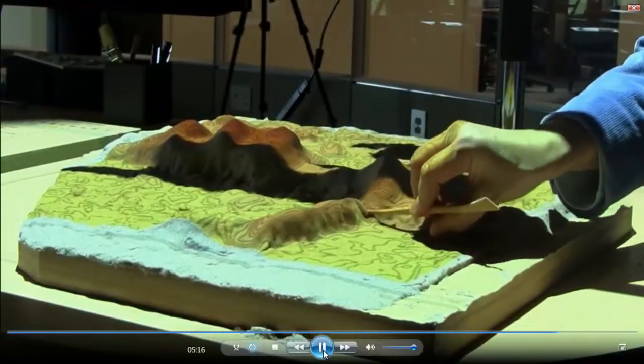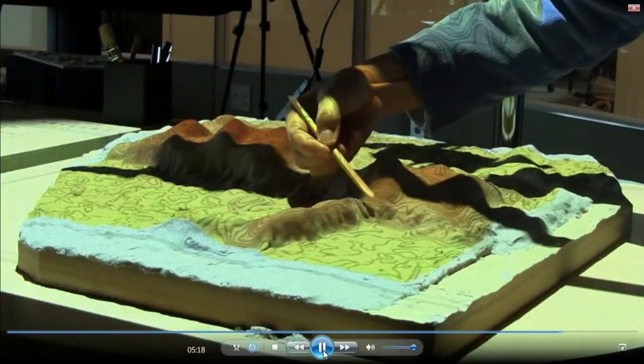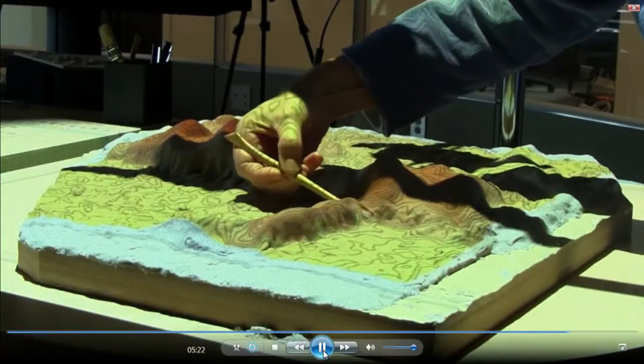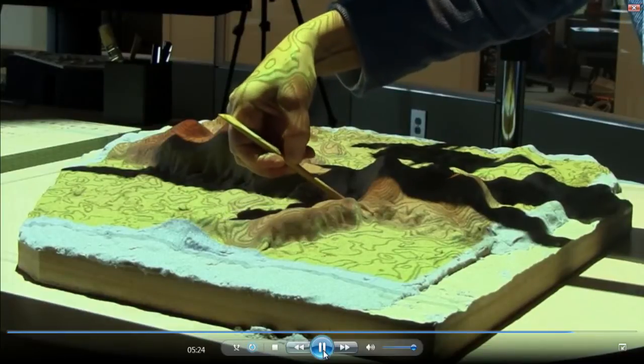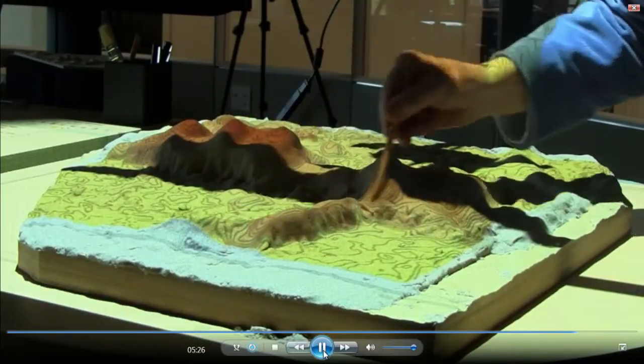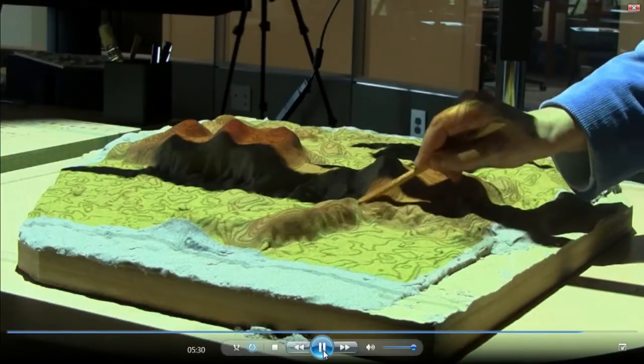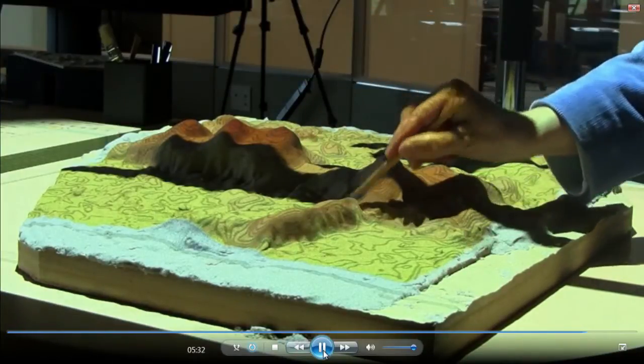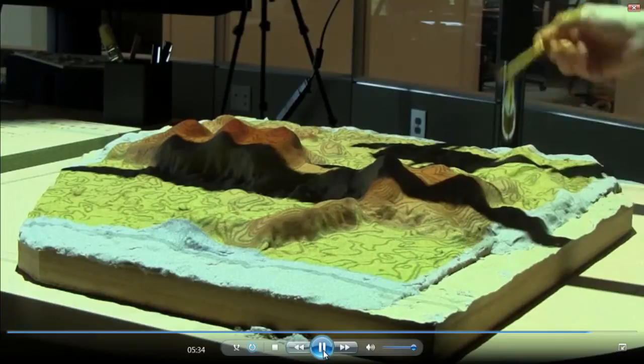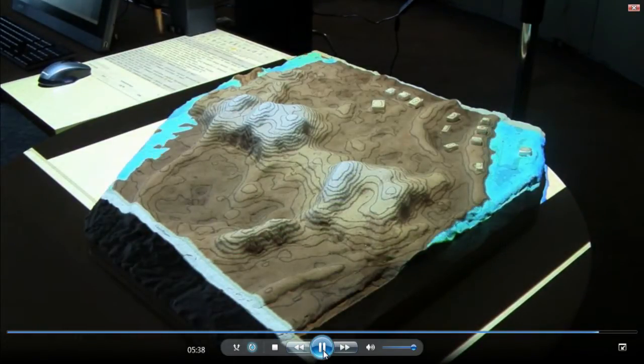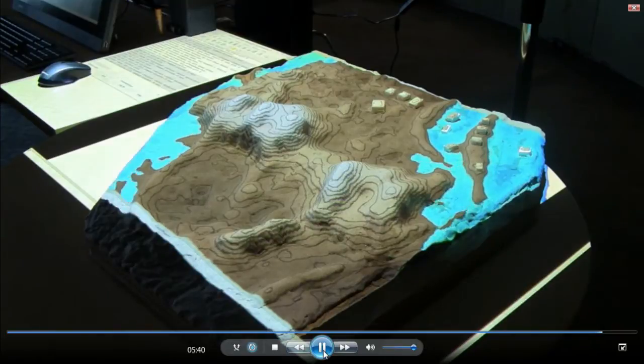Now we're sculpting the sand surface to create different change scenarios, and then we'll run some flooding models on it and show what can happen with sea level rise and storm surge. The Outer Banks have been hit hard by hurricanes and are at great risk from sea level rise.